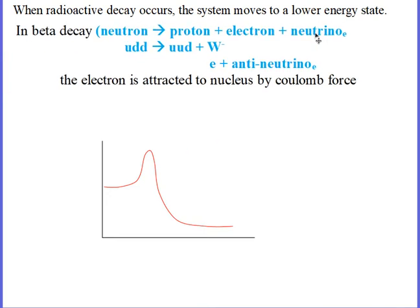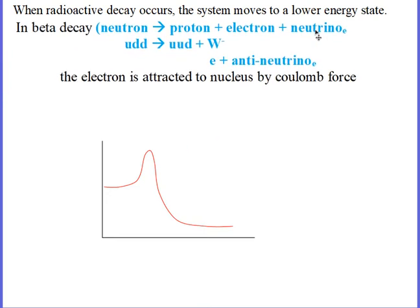Here would be the process of beta decay — this electron coming out of the nucleus. But I thought the nucleus was full of neutrons and protons. Well, it turns out that a neutron, if you get too many neutrons in the nucleus for the number of protons, they become unstable.